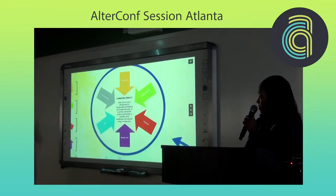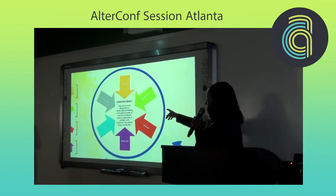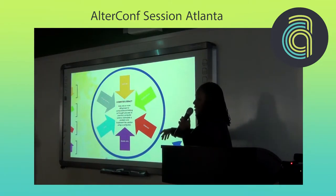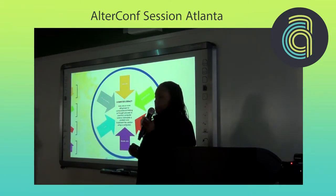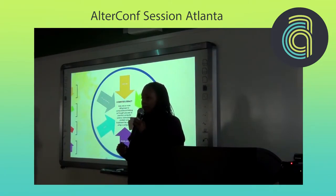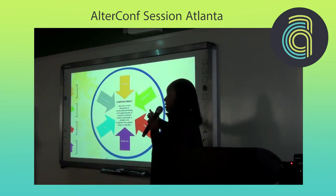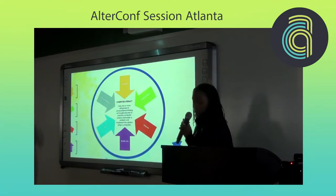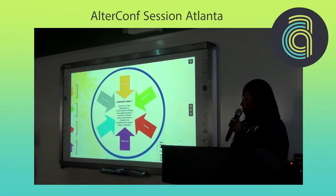Those six skill groups are devices, applications, internet, media arts, web, and programming. I think these are the six skill groups that kids need in order to be computer literate. Let me give you my definition of those skill groups.